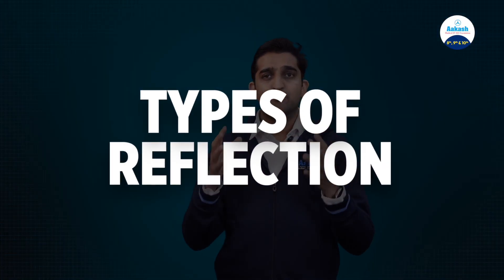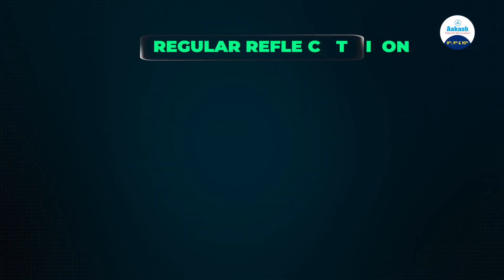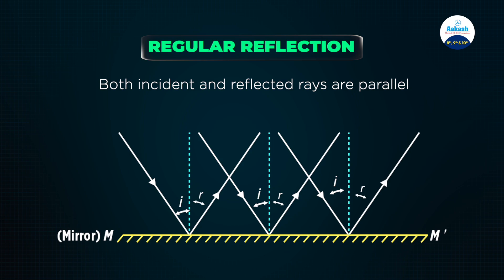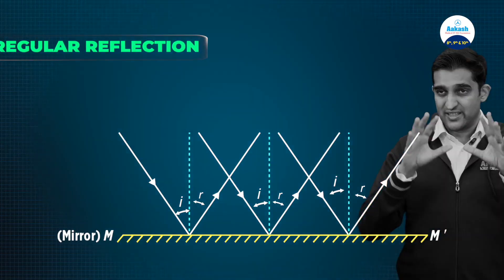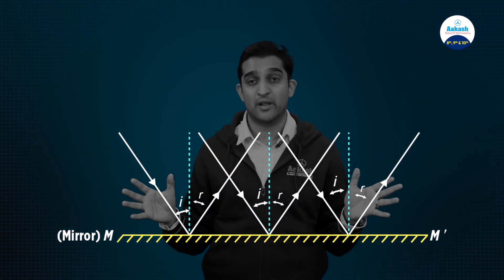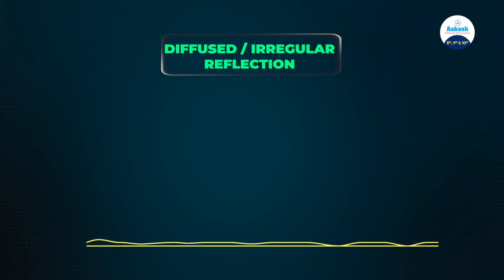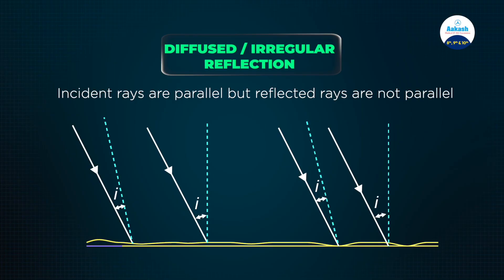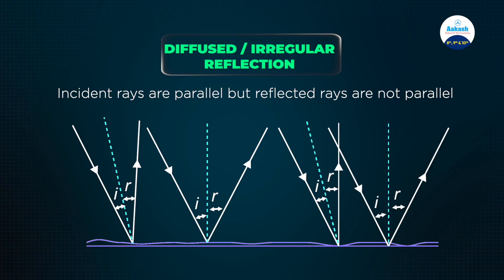Now let's look at different types of reflection. Regular reflection: when all parallel rays of light reflected from a plain smooth surface, like a mirror, remain parallel, the reflection is known as regular reflection. Diffused or irregular reflection: when all parallel rays reflected from a rough or uneven surface are not parallel, the reflection is called diffused or irregular reflection.